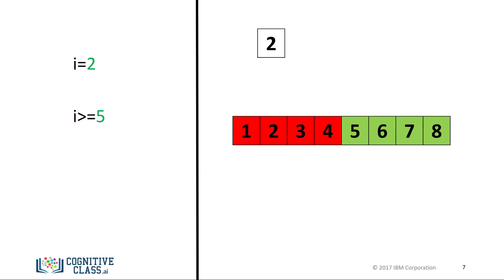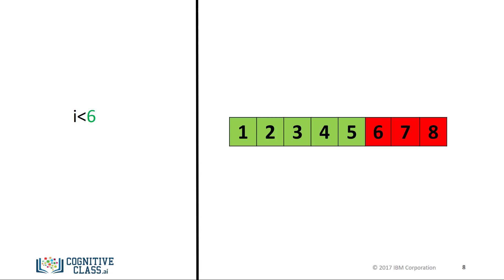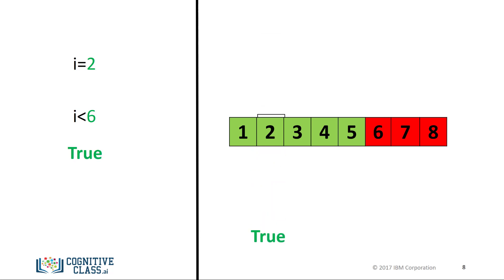If we set the value of i to 2, we would get a false because 2 is less than 5. We can change the inequality: if the value of the left operand i is less than the value of the right operand — in this case 6 — then the condition becomes true. We can represent this with a colored number line, with areas where the inequality is true marked in green, and red where it is false. If the value for i is set to 2, the result is true, as 2 is less than 6.